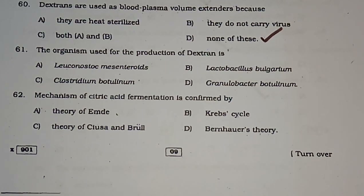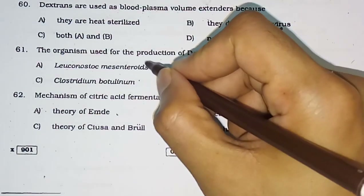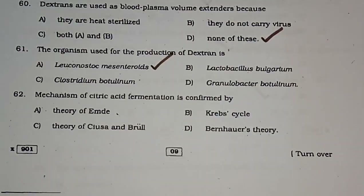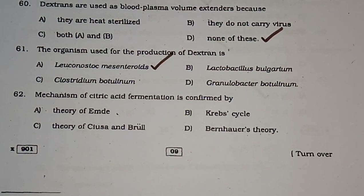Question number 61: The organism used for the production of dextrans is — Leuconostoc mesenteroides, Lactobacillus bulgaricus, Clostridium botulinum, or Granulobacter botulinum. The correct answer is Leuconostoc mesenteroides.